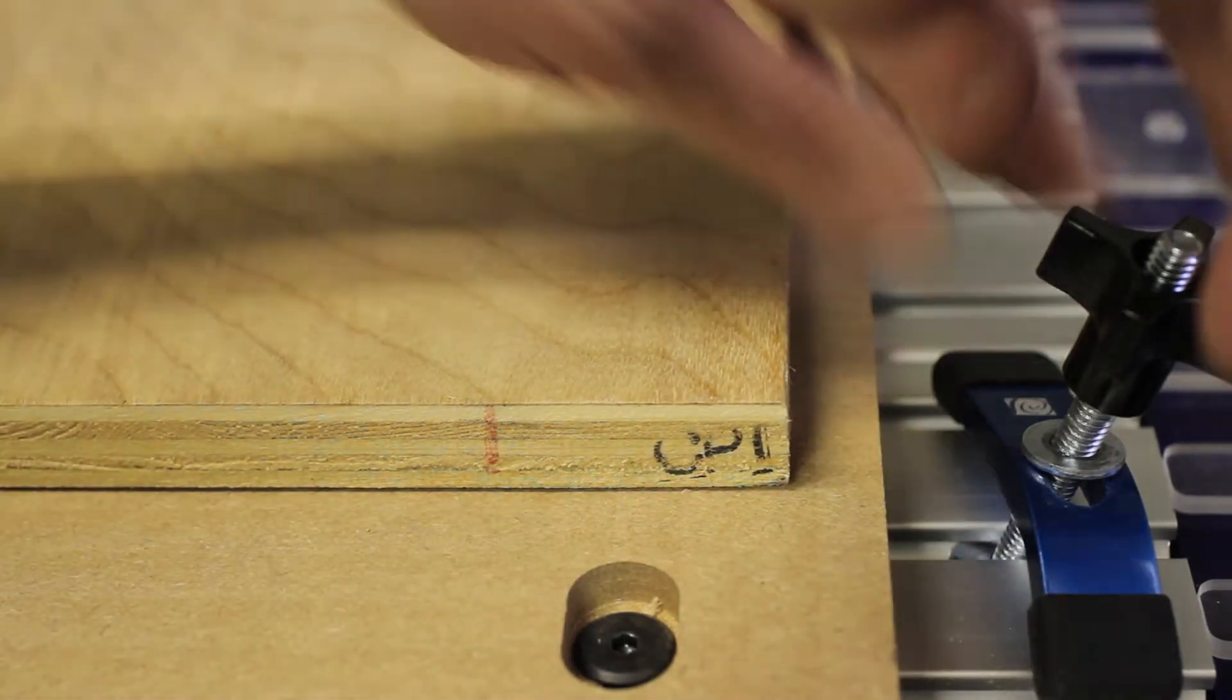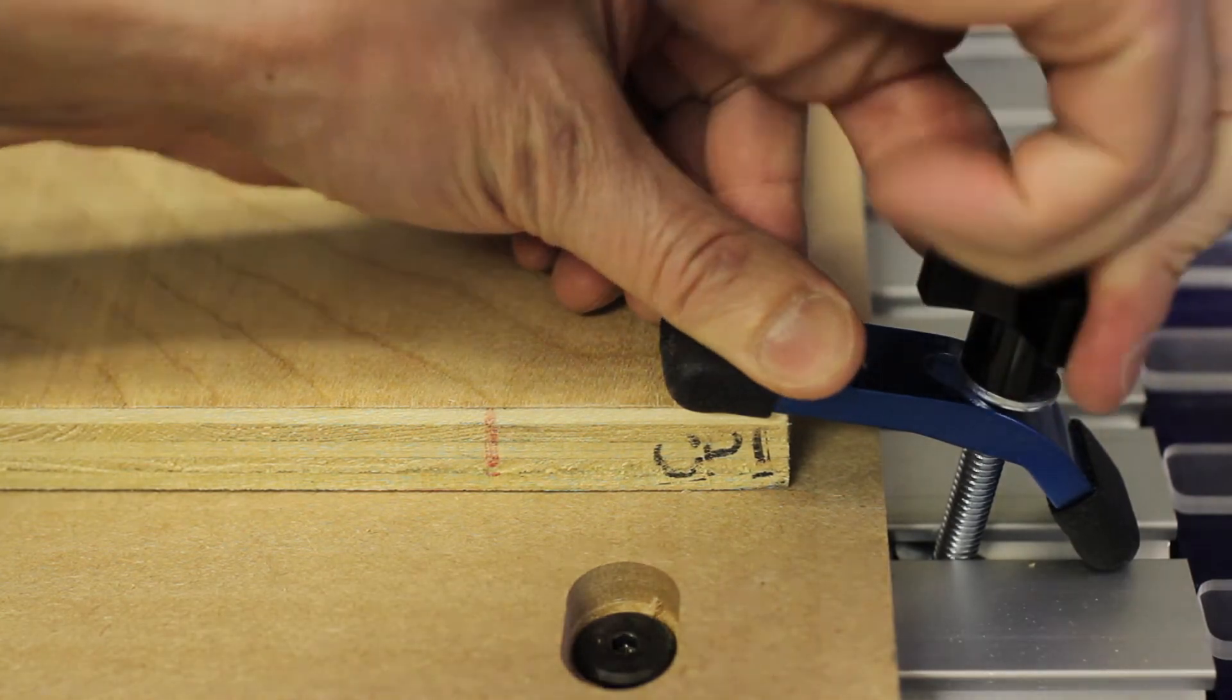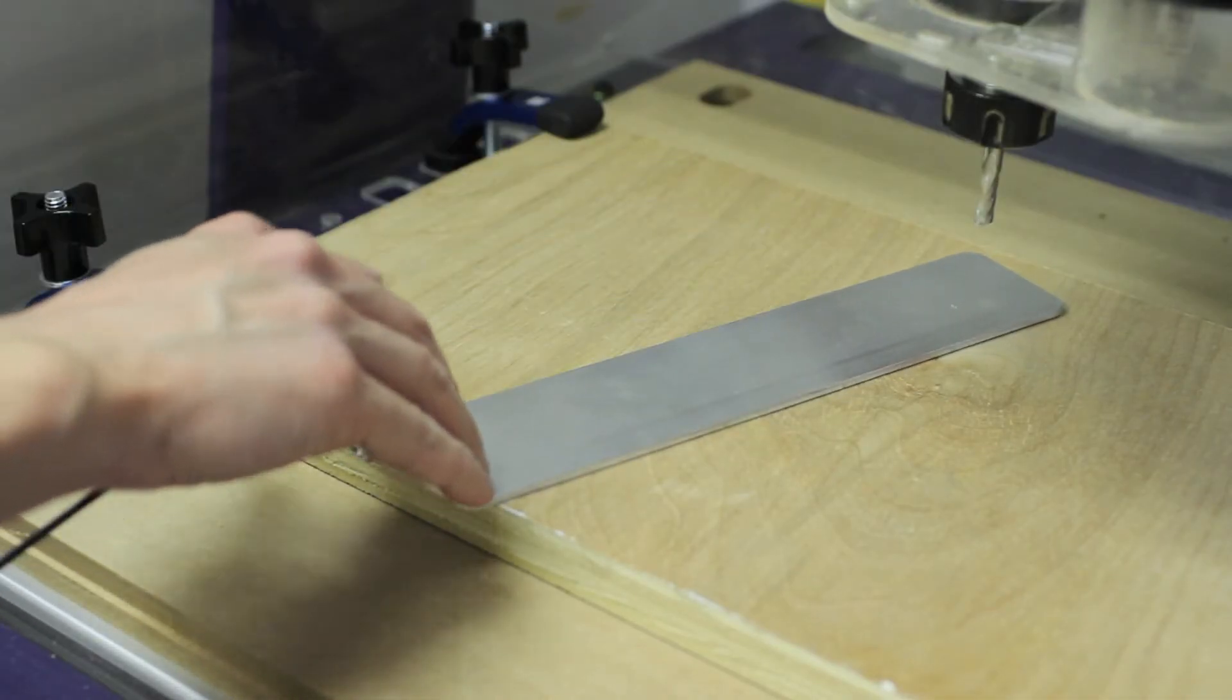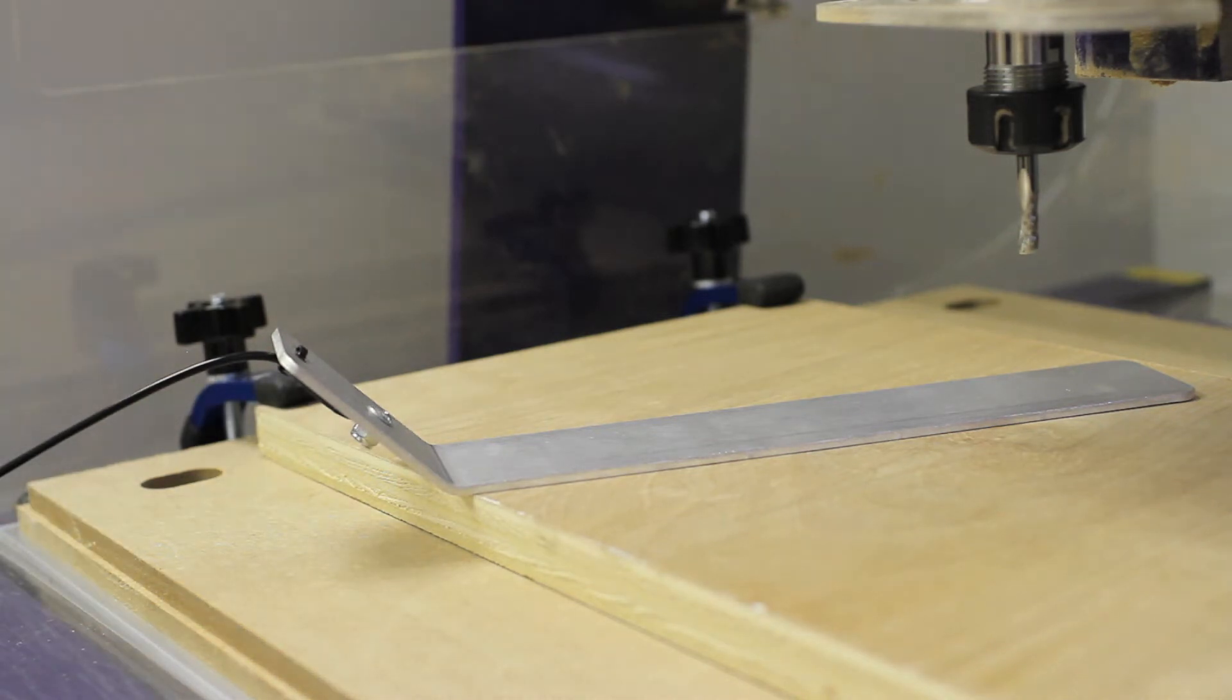First you place your material to be cut on the machine's bed and clamp it down securely using whatever hold-down method you're going with. Next you lay the zero plate on top of your material after making sure that there's no dust or debris between the plate and your material. Also make sure that the plate is laying perfectly flat, otherwise it will calibrate improperly.